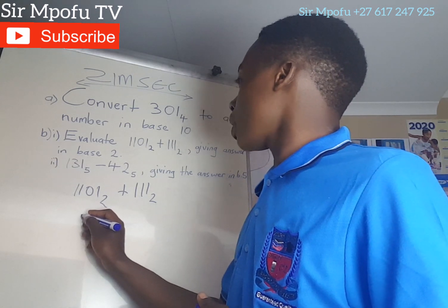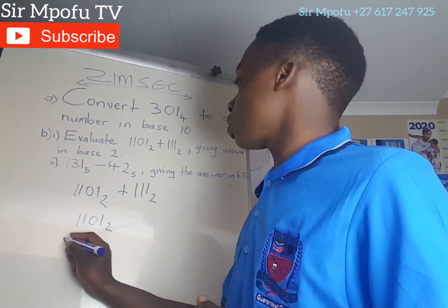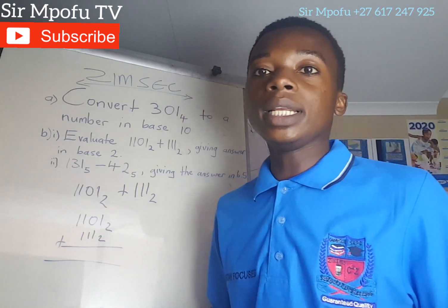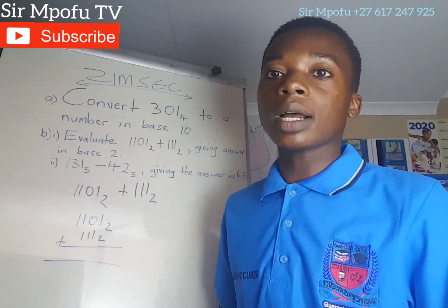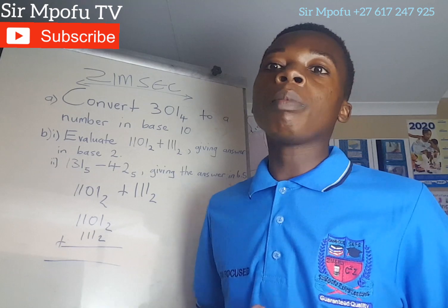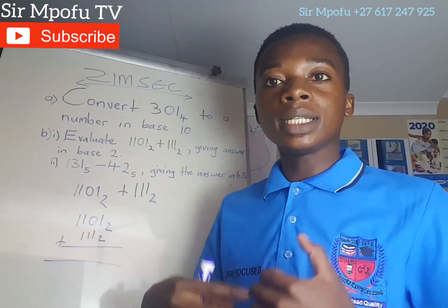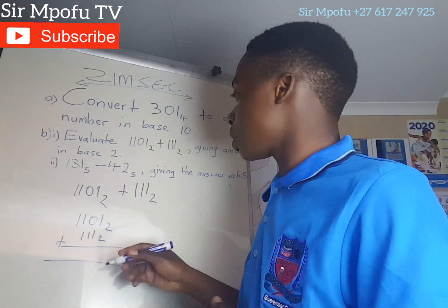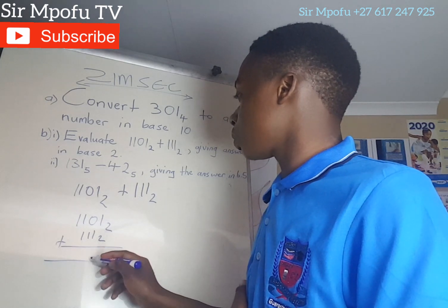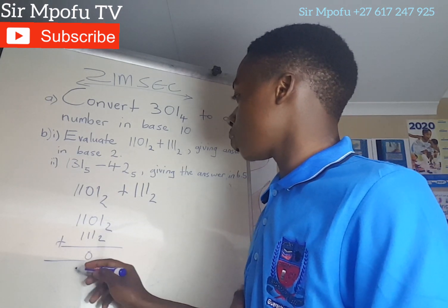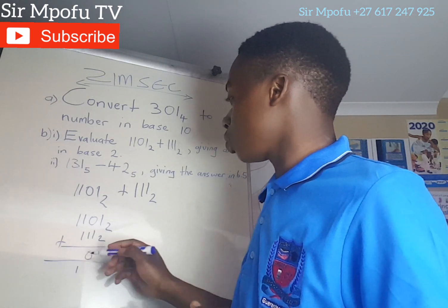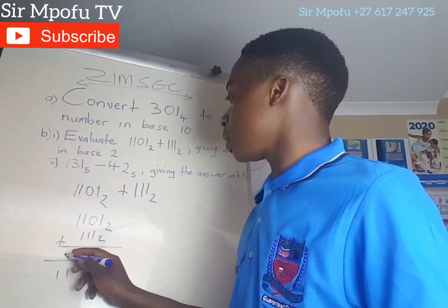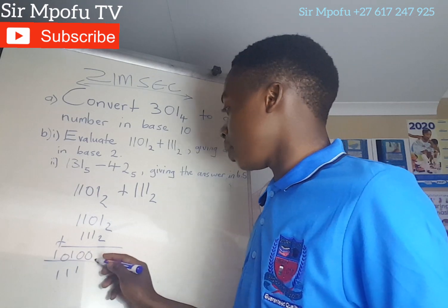So I will add 1, 1, 0 and 1 in base 2. Adding column by column: 1 plus 1 is 2, answer 0 carry 1. 1 plus 1 plus 1 is 3, answer 0 carry 1. Then 1 plus 1 plus carry 1, answer 0 carry 1 — up in base 2.